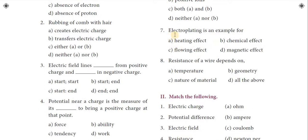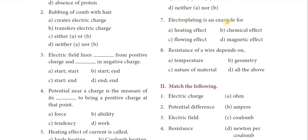Seventh question: electroplating is an example for — Option B — chemical effect. Electroplating is an example for chemical effect.